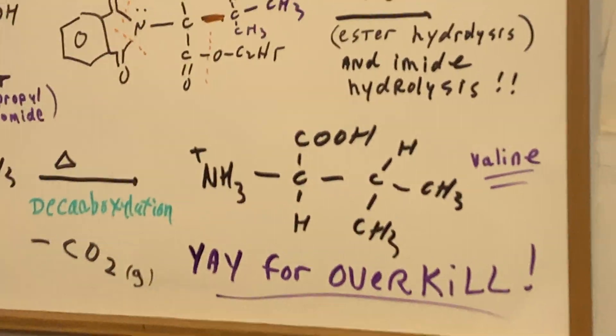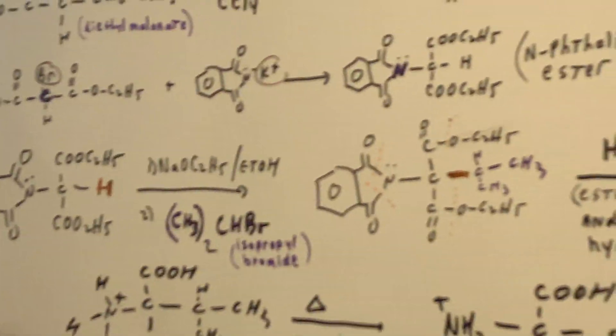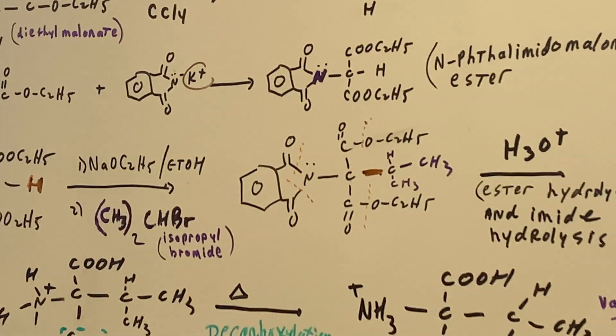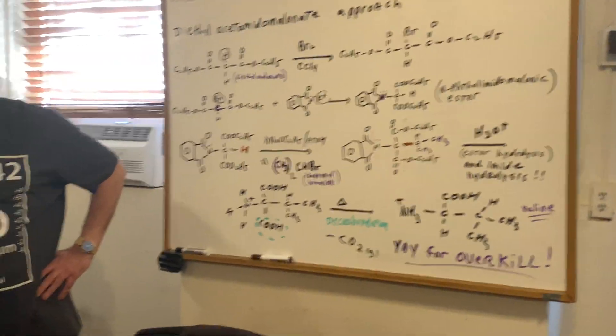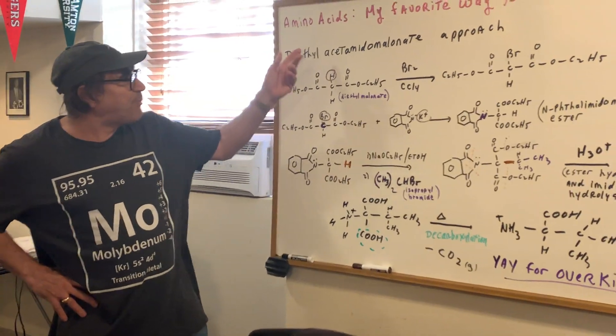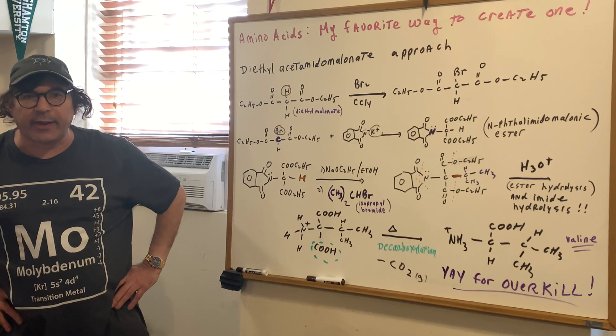This is easily the best way to make an amino acid. So if you're going into finals exams and stuff like that, some of you are still taking organic 2. So go back to this tape, because this will show you the best way to make an amino acid, is by this procedure using the diethyl malonate, malonic ester.